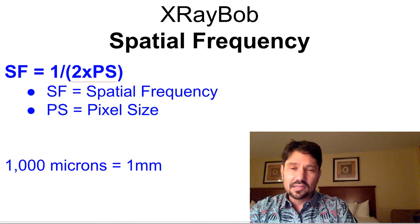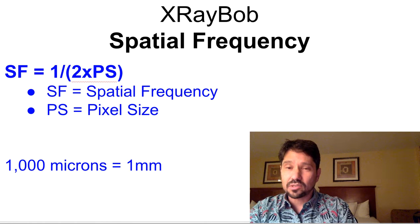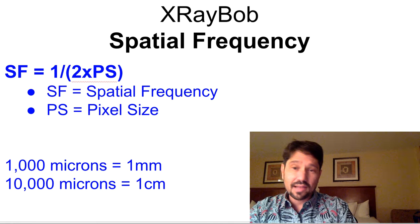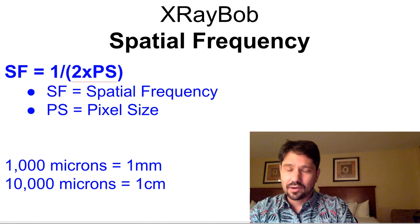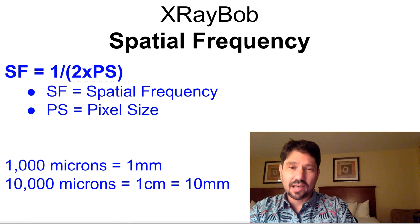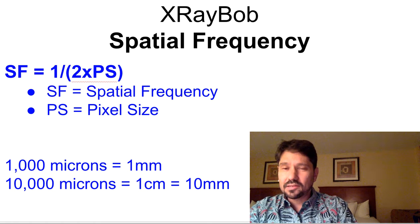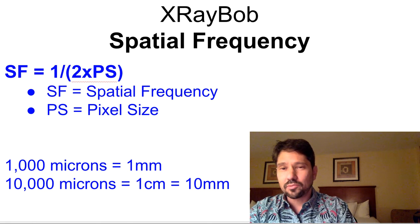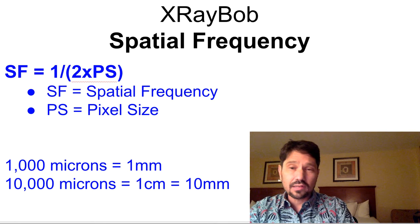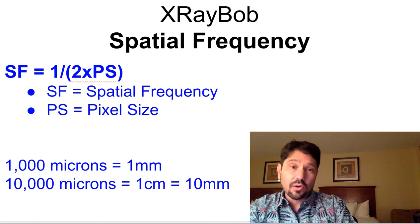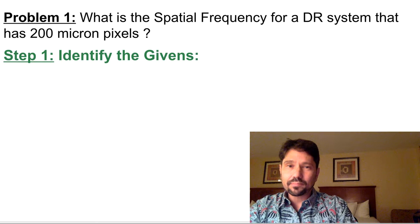All right, the other things you'll need to know is that 1,000 microns equals a millimeter, and that 10,000 microns equals a centimeter, and I'm sure you all know 1 centimeter equals 10 millimeters. You'll need that to do some conversions because sometimes they'll give you pixel size in microns, and they'll want to know line pairs per centimeter.